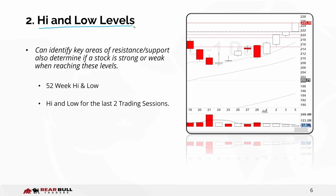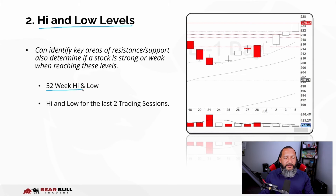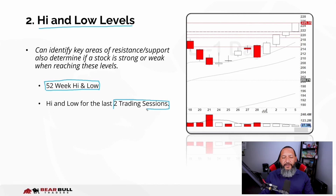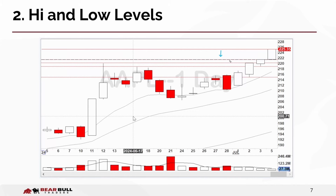Number two is high and low levels. The 52-week high and 52-week low are very important — when a stock is hitting all-time or 52-week lows you'll see a lot of volatility around that area. In this case Apple is hitting an all-time high, and at 52-week highs you may see some resistance. We also mark the highs and lows of the last two trading sessions. I mark these down every single day on my charts — Dash Trader Pro does a great job putting these automatically on the chart as dotted red lines.